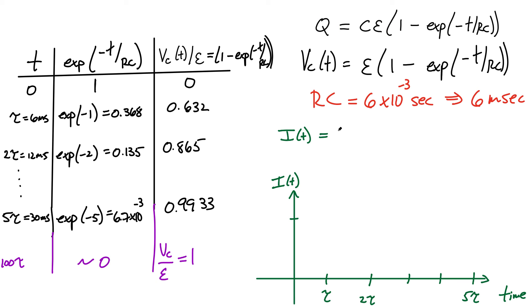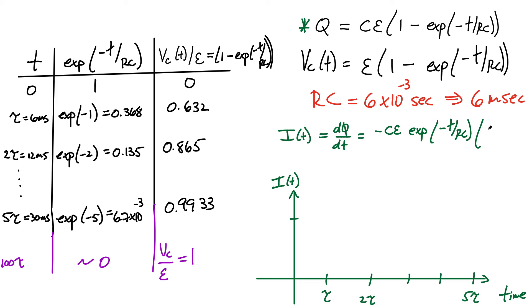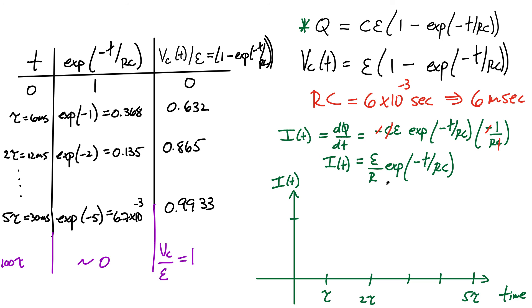To get the current as a function of time, remember I = dQ/dt. Differentiating Q(t) = C·EMF·[1 − e^(−t/RC)], the first term (C·EMF) is a constant so its derivative is zero. The second term is −C·EMF·e^(−t/RC), and taking the derivative gives −C·EMF times the derivative of the exponential, which by the chain rule is (−1/RC)·e^(−t/RC). Simplifying — the negative signs cancel and C cancels — we get I(t) = (EMF/R)·e^(−t/RC). This is a decaying exponential.